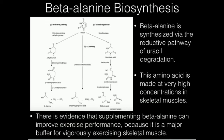Beta-alanine is made at very high concentration in skeletal muscle. The reason is that beta-alanine is going to be condensed with another amino acid, and it's going to basically be a buffer for vigorously exercising skeletal muscle. Whenever you have a tissue or a cell that's highly metabolically active, it's going to be producing a lot of acid and its pH is going to drop, which can be detrimental to cell function. Beta-alanine and its condensed derivative, carnosine, are going to act as buffers inside skeletal muscle cells and provide a large contribution to the overall buffering capacity.